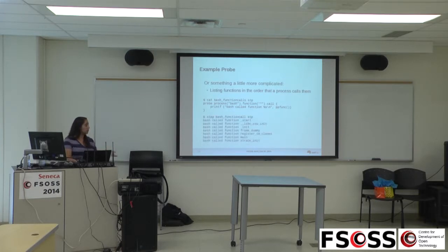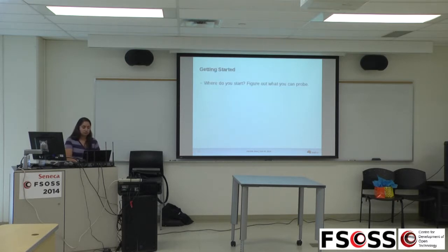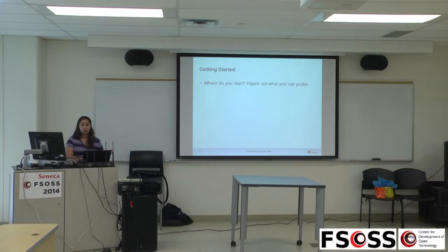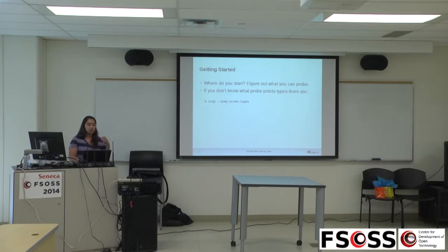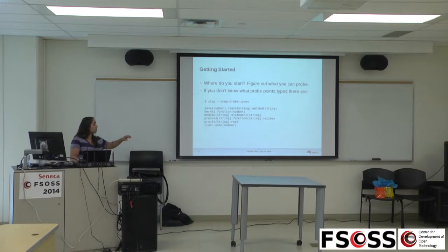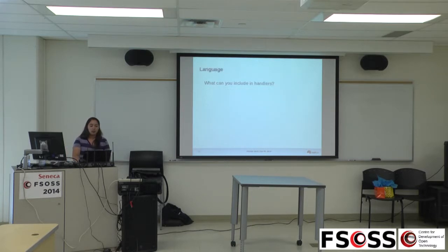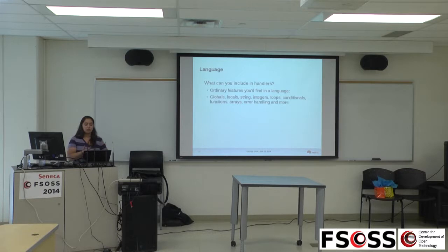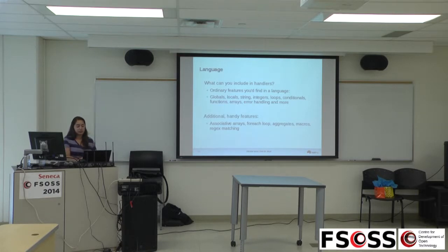Now that you've seen some examples, where do you get started? I usually start by figuring out what you can probe. You can look at available probe point types by executing stap --dump-probes. Basic categories include Java probes, kernel probes, module probes, and process probes. Within handlers, SystemsTap has ordinary language features: globals, locals, strings, integers. It also has additional handy features like associative arrays, for-each loops, aggregates, macros, and regex matching.